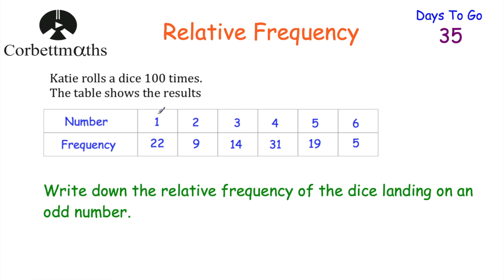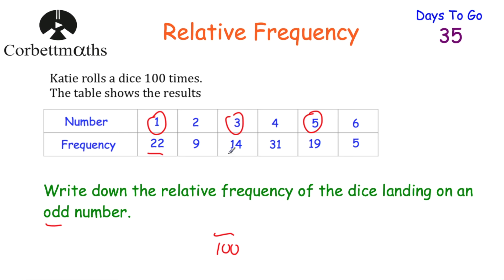Our next question gives us a table: Katie rolls a dice 100 times. It lands on a 1 twenty-two times, a 2 nine times, a 3 fourteen times, a 4 thirty-one times, a 5 nineteen times, and a 6 five times. Write down the relative frequency of the dice landing on an odd number. We know it's rolled 100 times, so we put 100 on the denominator. The odd numbers are 1, 3, and 5, so we add 22 + 14 + 19 = 55. So the relative frequency of landing on an odd number is 55/100.